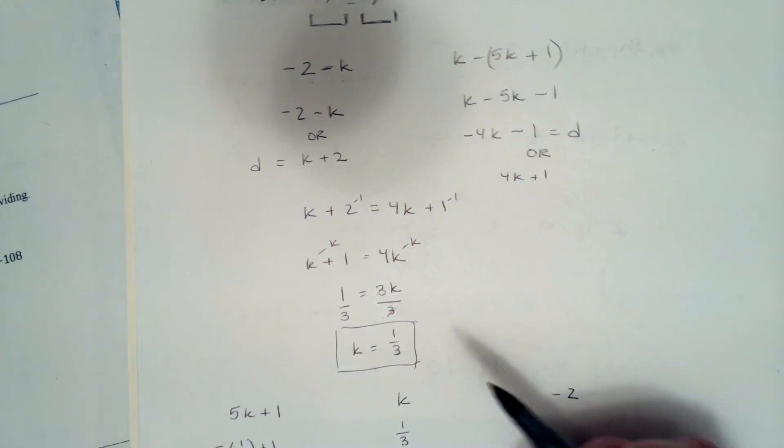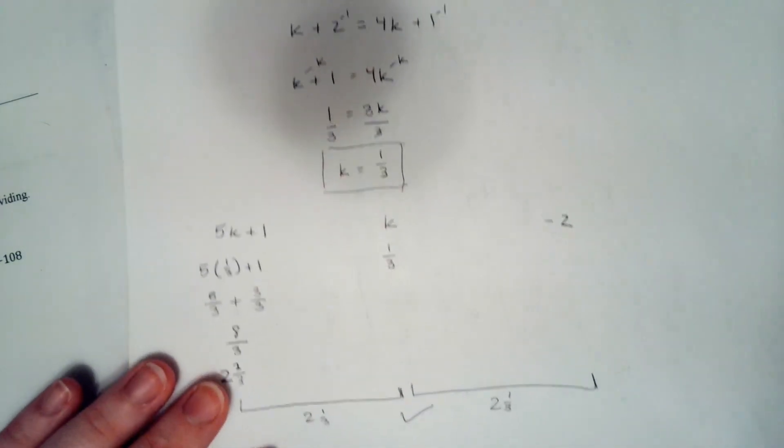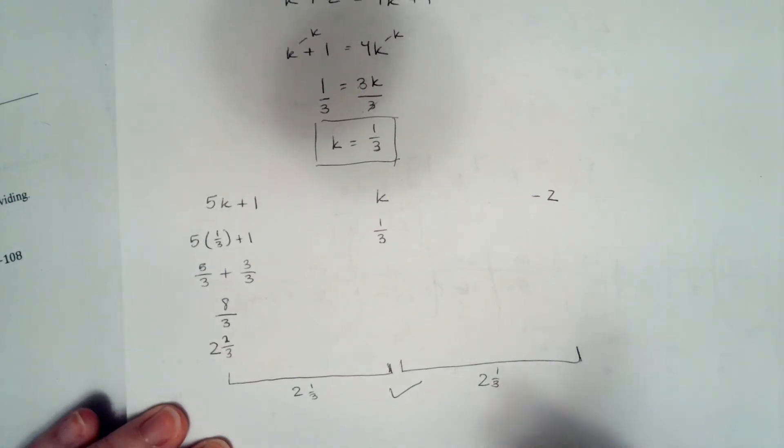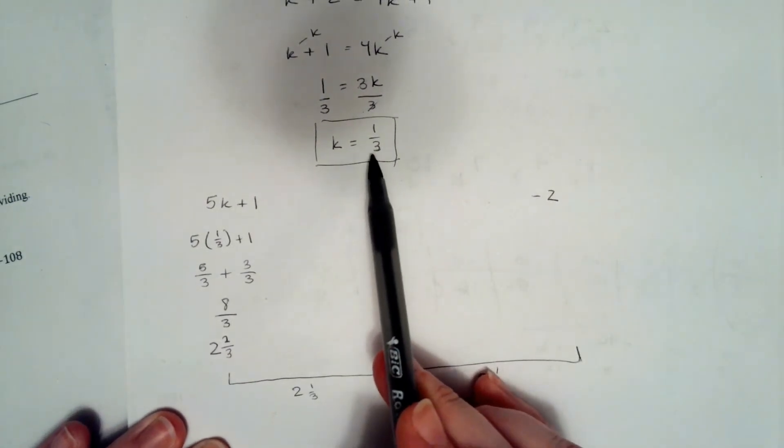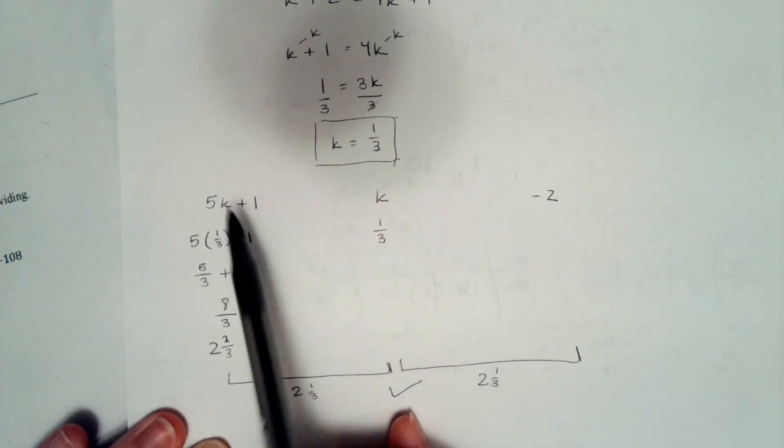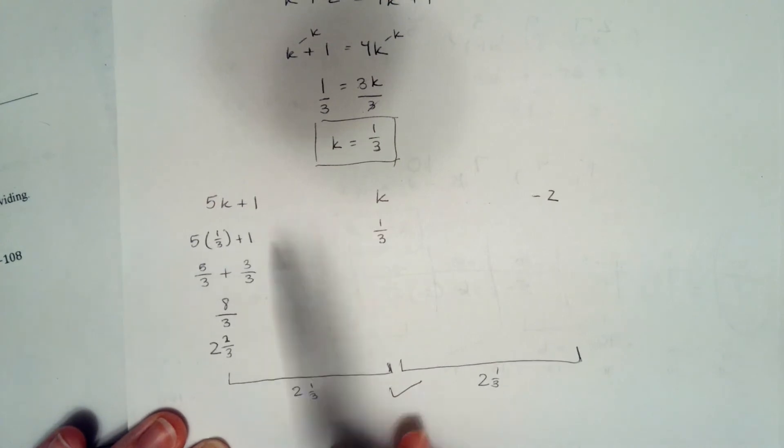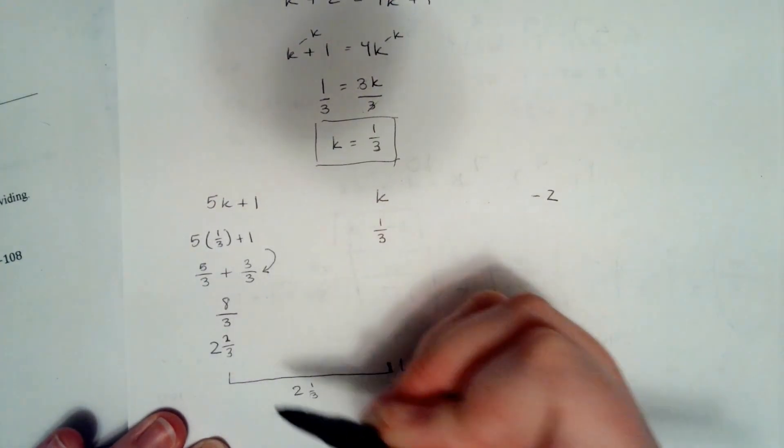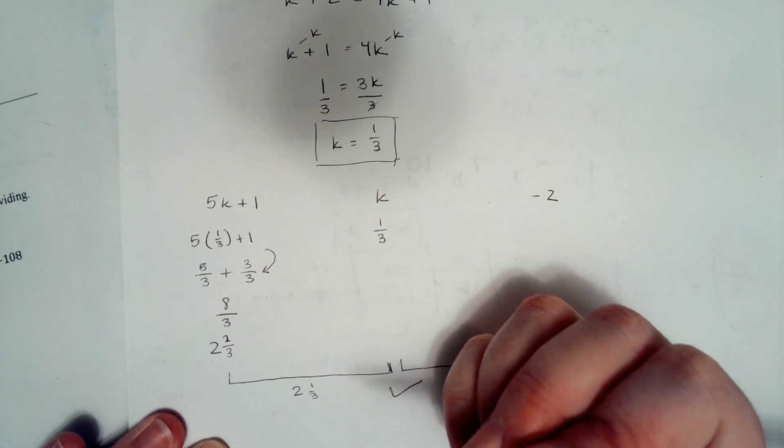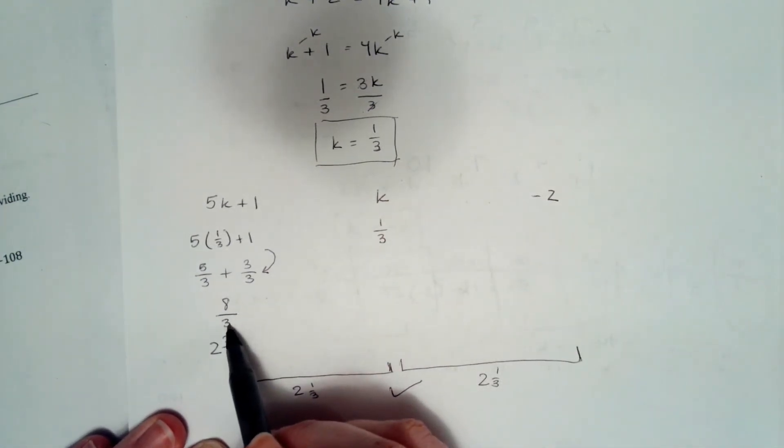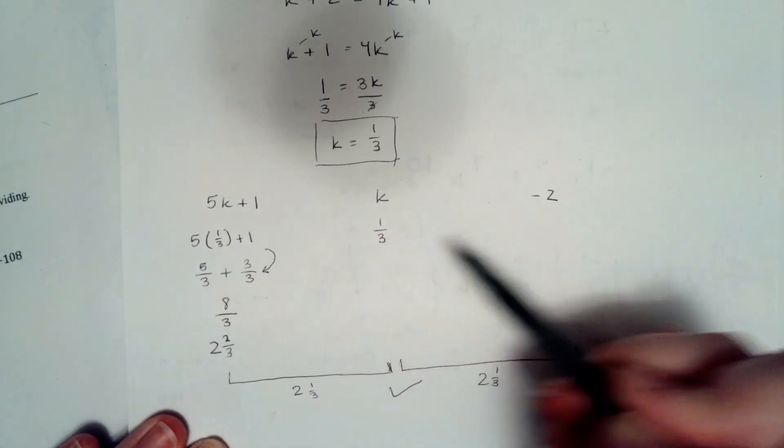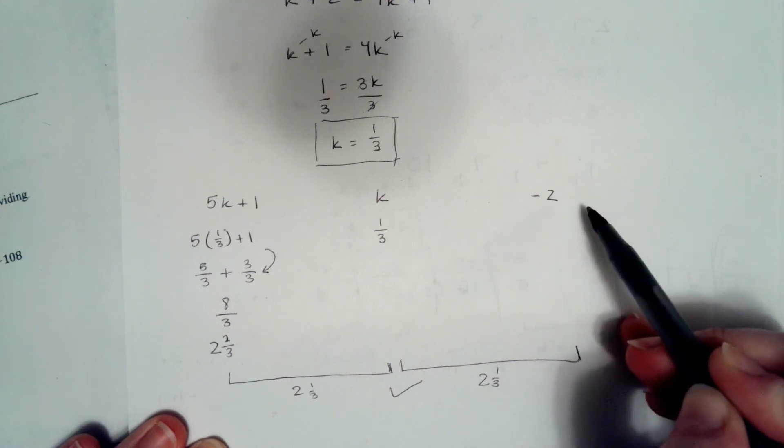Alright, now we're going to look back and check our answer. The way we're going to do that is we're going to plug our k back into our original problem. So 5 times 1 third is 5 thirds plus 1, which just for convenience I rewrote as 3 thirds, gives us 8 thirds, which we can simplify to 2 and 2 thirds if we write it as a mixed number. k is simply 1 third and then our third term is just negative 2.